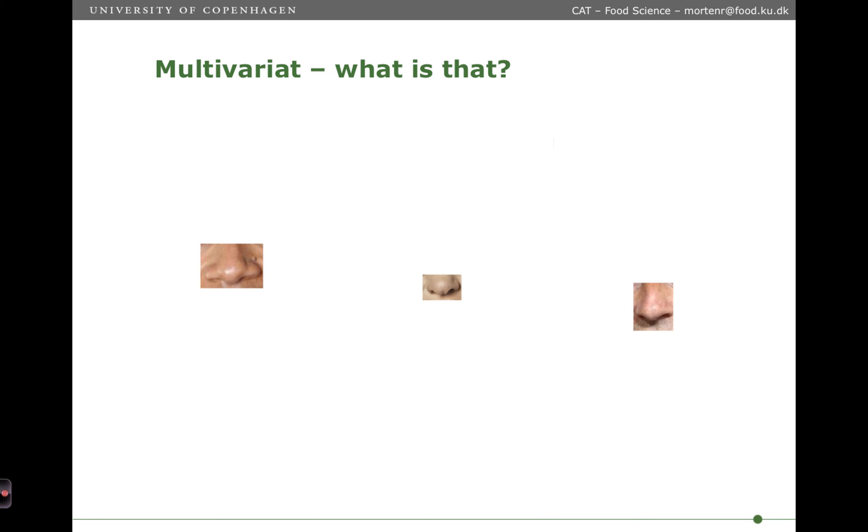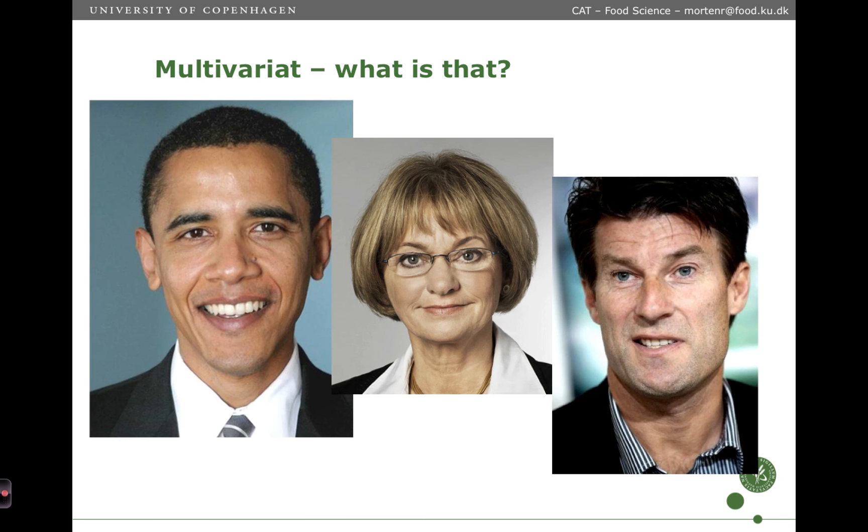So what is multivariate? Here we have three faces, but what we are given is only the nose from the three faces. So what we see is that it's hard to recognize which face these noses belong to. It is known persons, at least from a Danish perspective. If we add a little more than one feature, so now we have three features: the nose, the mouth and the cheek, we will see that we have a better chance of telling who these persons are. So I would suspect that this is Barack Obama and this is a Danish politician and this guy I don't really know. Anyway, which is what is difficult with one feature becomes more easy with three features. But when we are given all the features of the face, it will be easy to recognize that we have an American politician, a Danish politician and a soccer player.